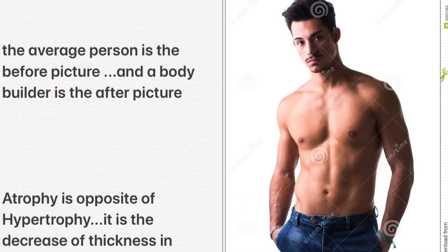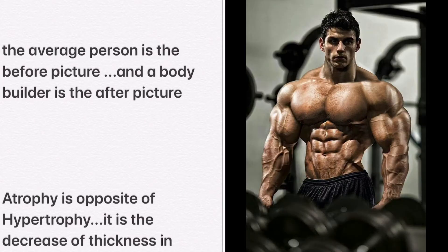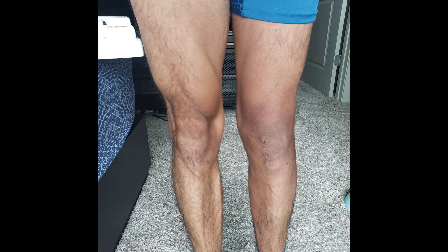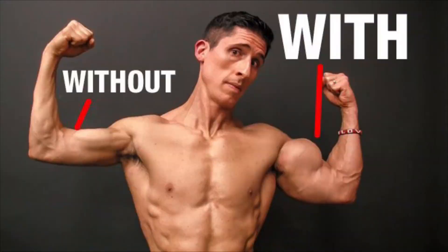Decades spent working out with weights to thicken muscle cells. The average person is the before picture, and a bodybuilder is the after picture. Atrophy is the opposite of hypertrophy — it is the decrease of thickness in muscle cells. Think of an arm or a leg after a cast has been removed; that is an example of atrophy. When you compare one limb to another, you really see the difference of what happens when you don't use your muscles for a while.